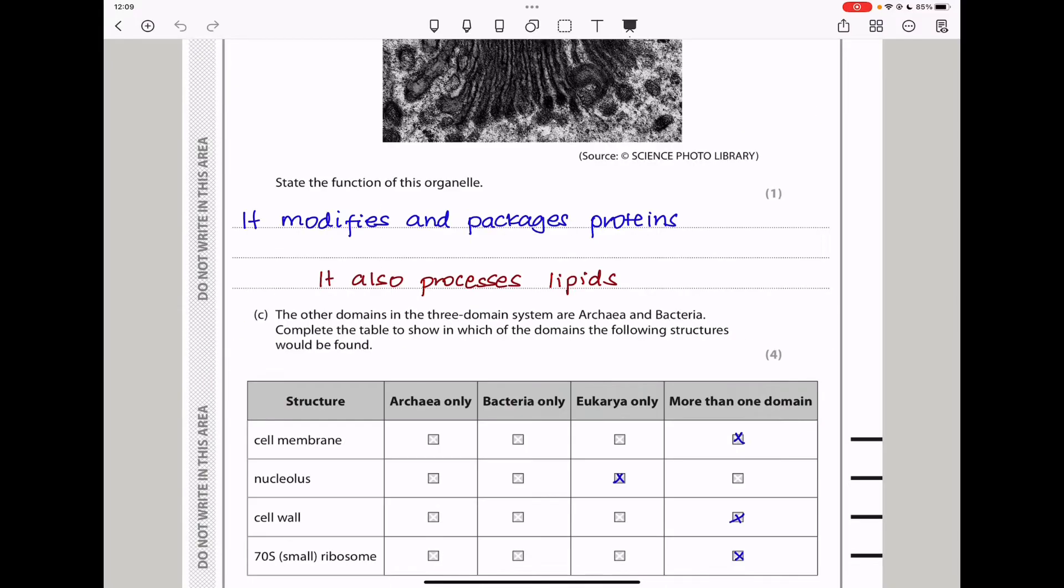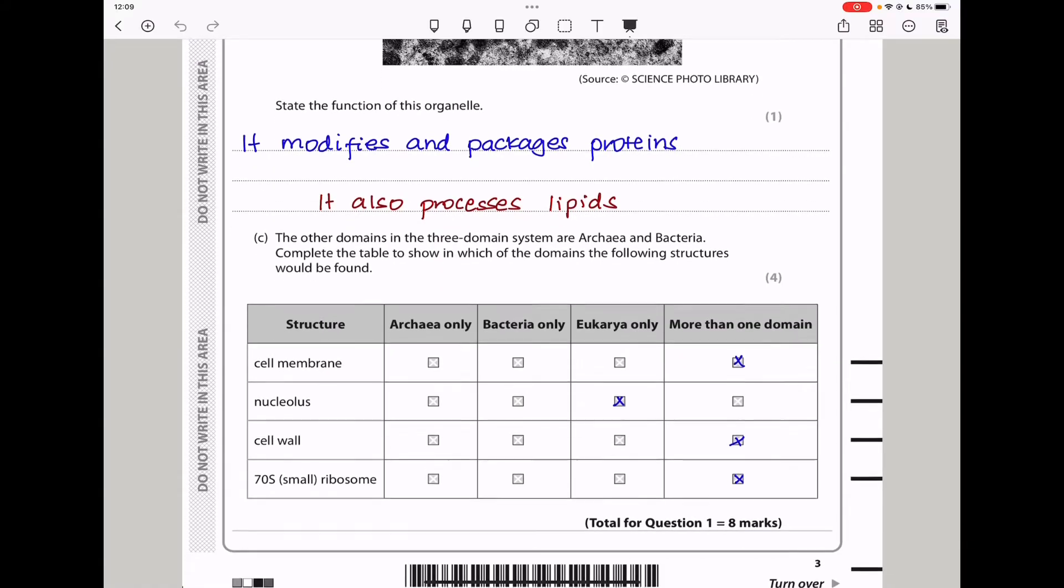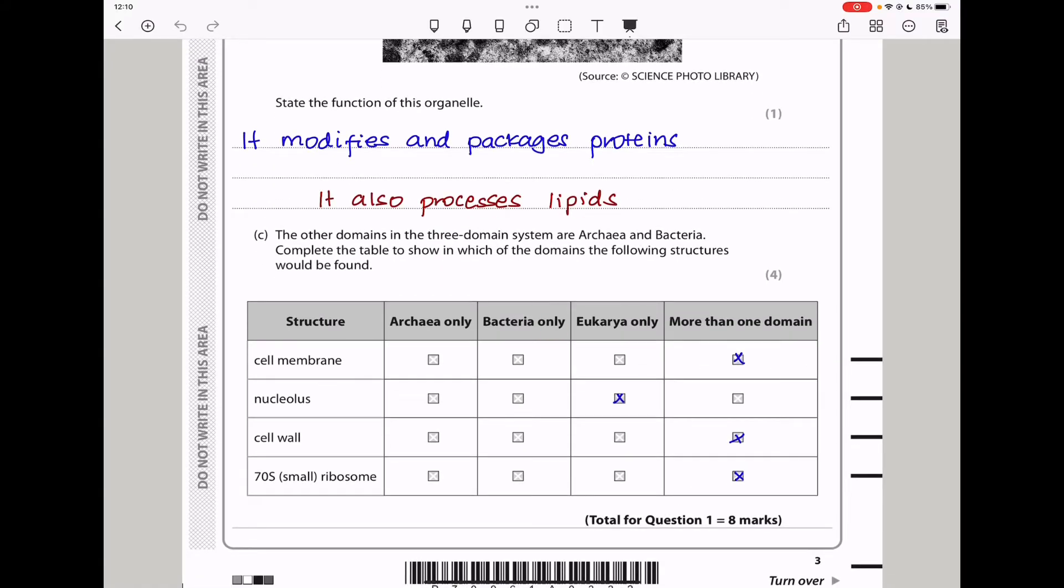Next, they say, the other domains in the three-domain system are archaea and bacteria. Complete the table to show in which of the domains the following structures will be found. The cell membrane is, of course, going to be found in more than one domain. The nucleolus is going to be found in eukarya only because these have a nucleus. The cell wall is also going to be found in more than one domain because eukaryas do have a cell wall as well. The 70S ribosomes are also going to be found in more than one domain. So this brings us to the end of question one.